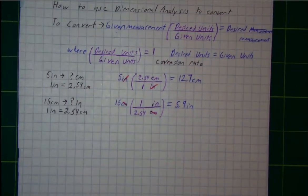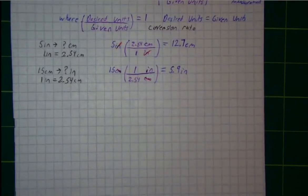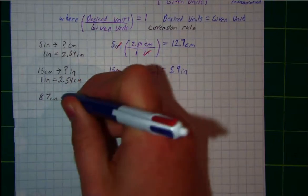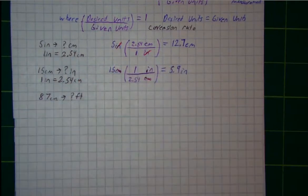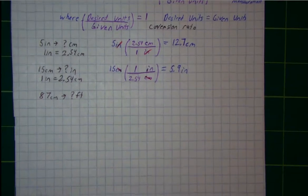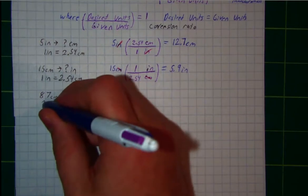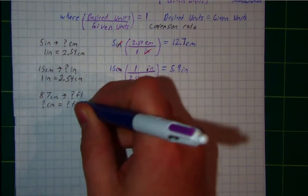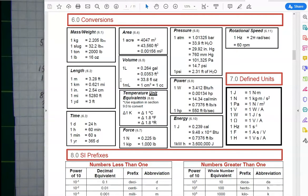Let's try a more difficult example. I want to convert 87 centimeters to feet. The reason this is a little more difficult is because I don't know how many centimeters equals how many feet. If I look at my conversion chart that we were given, it does not tell me how to convert centimeters to feet.